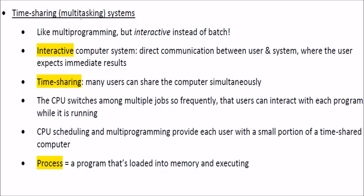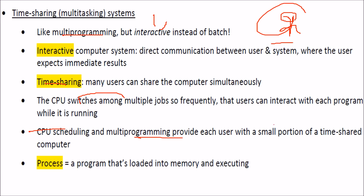Time sharing, or multitasking, is like multiprogramming but interactive. Users can see and interact with their programs. The CPU switches among multiple jobs so frequently and so fast that users cannot notice that their work was not being processed for a fraction of time. CPU scheduling and multiprogramming together provide each user with a small portion of the shared system. There can be multiple users simultaneously.